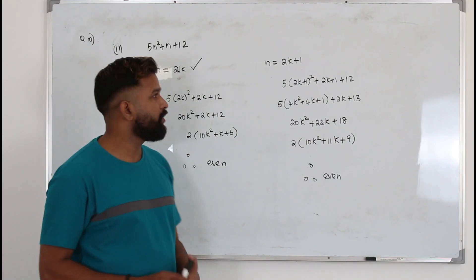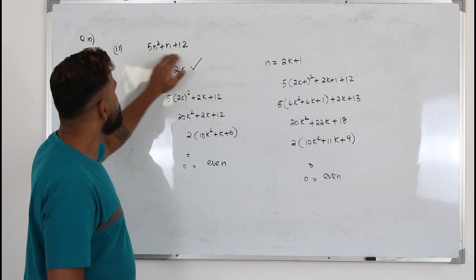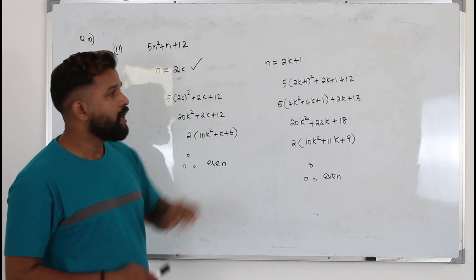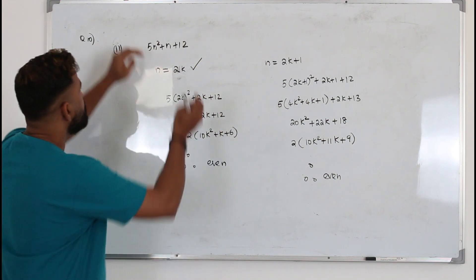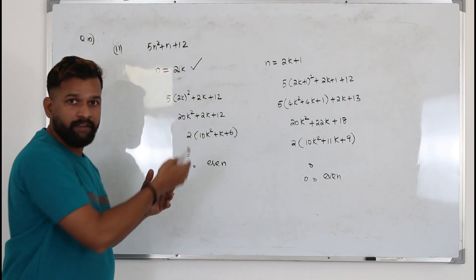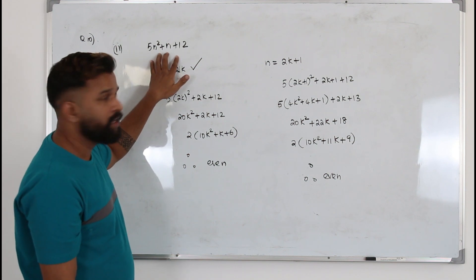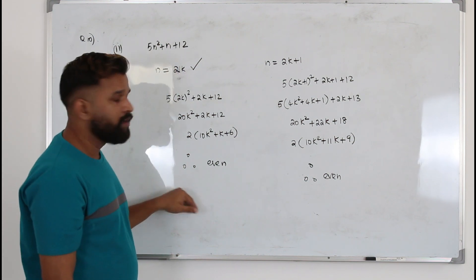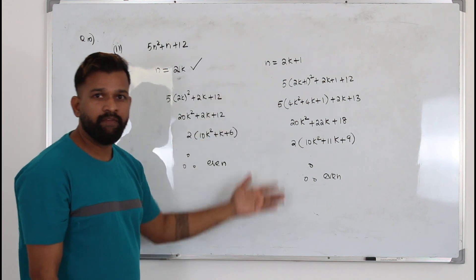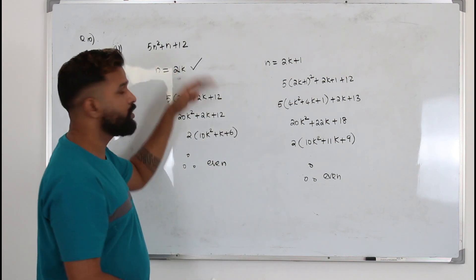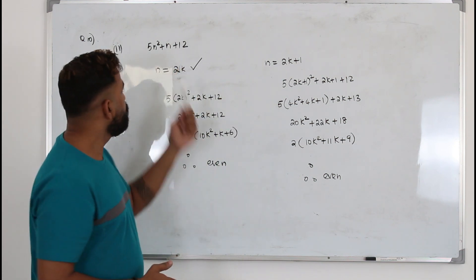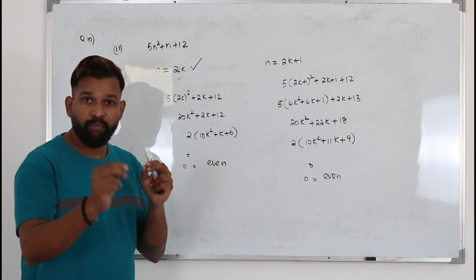The most common mistake here: whenever they want you to prove that this expression is even, I have seen students plug in some random values for n. For example, let's say they put n equals 3, you get some even number, and put n equals 5, you get an even number. They say therefore this is always even. No, that's wrong. You are proving it for only two particular cases.